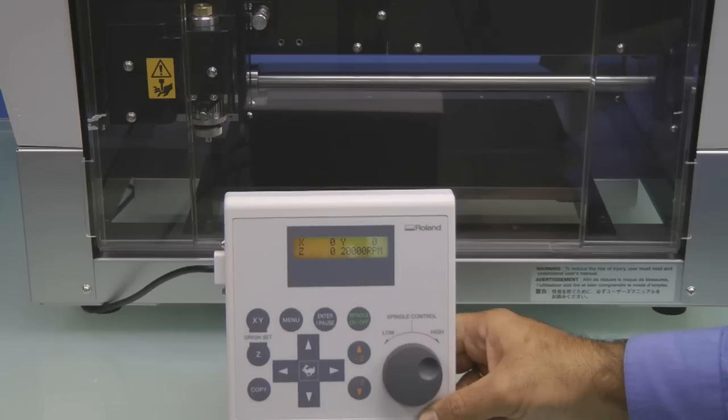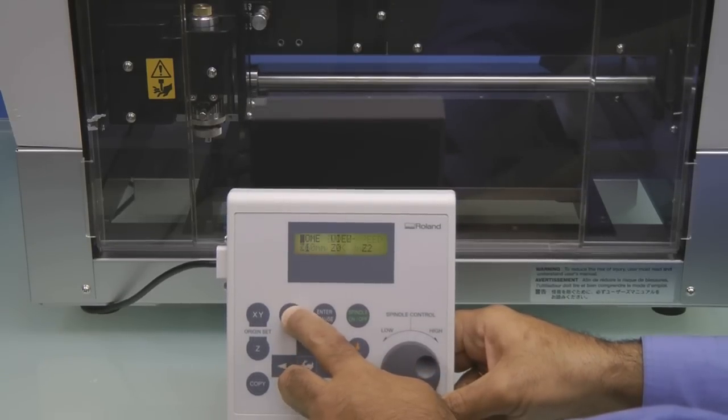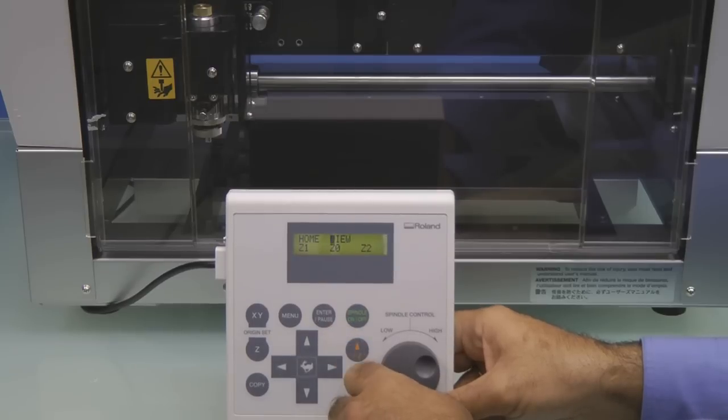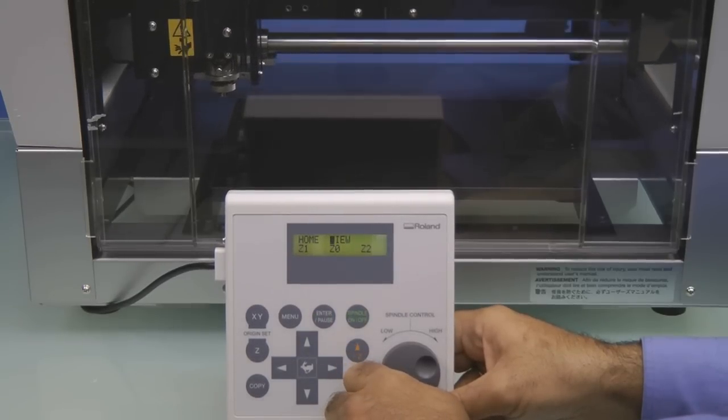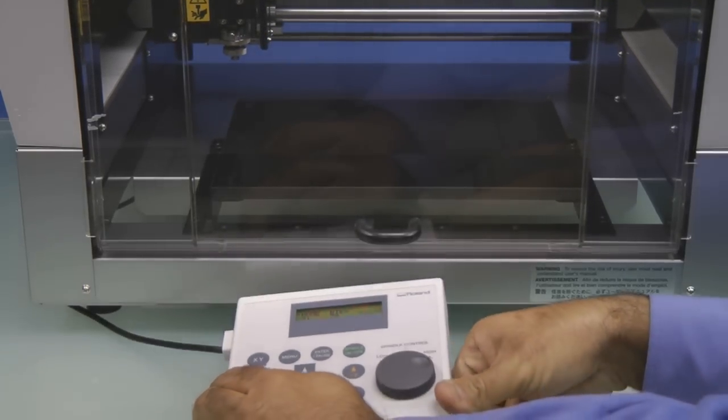Ensure the cover is closed and on the handy panel, we want to press the menu key until you see the home view and Z movement menu. Press the right arrow to select view and hit the enter key to move the carriage to the view position for setup.